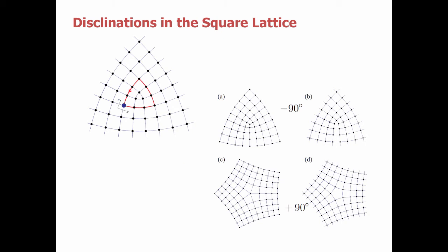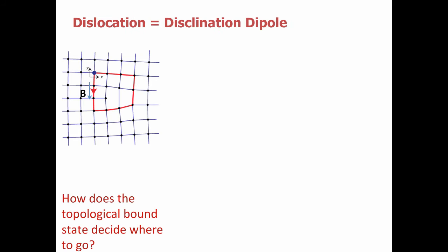Now we might ask, can these disclinations harbor topological bound states? And the first indication this was true is from the following example.